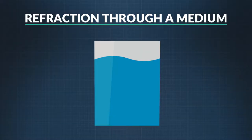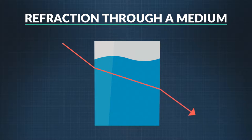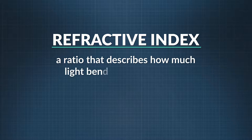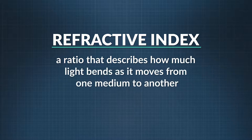Other kinds of waves, like sound waves, can also refract, but we're going to focus on light today. What causes refraction? Basically, it's because the speed of light changes depending upon the medium it's traveling through. The angle of light rays can also change as they move from one medium to another. How much it changes depends on the refraction index — a ratio that describes how much light bends as it moves from one medium to another, which depends upon the density of the medium.